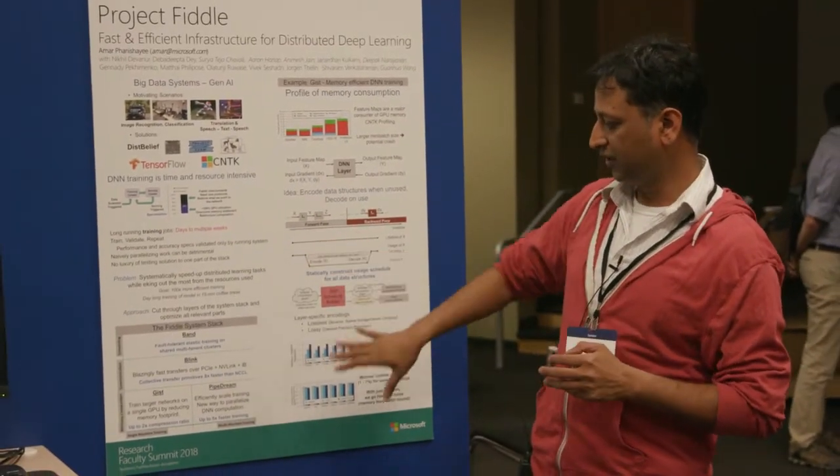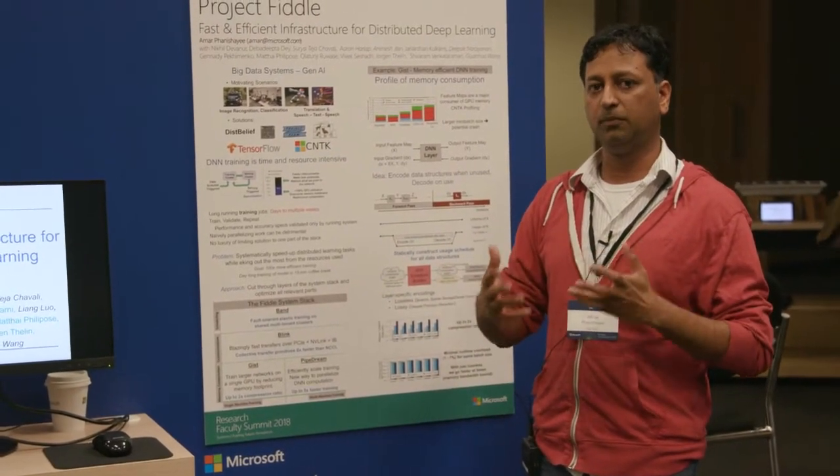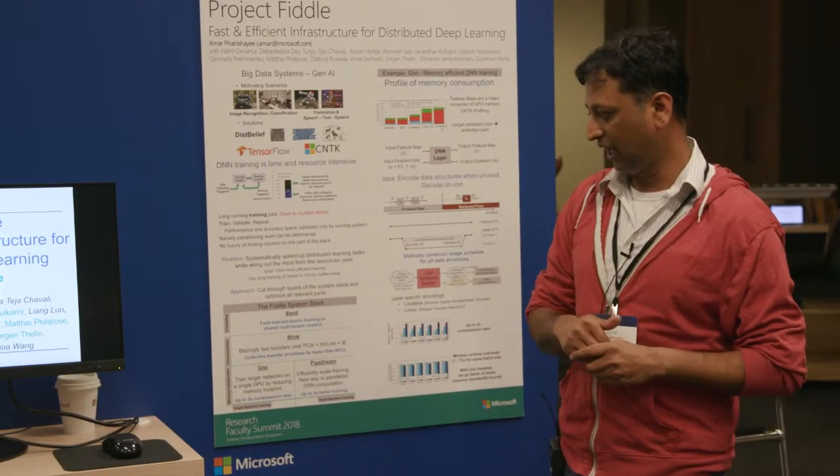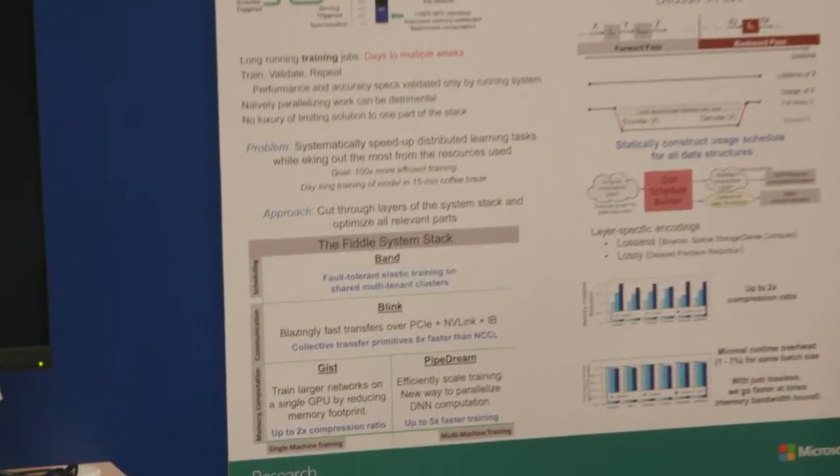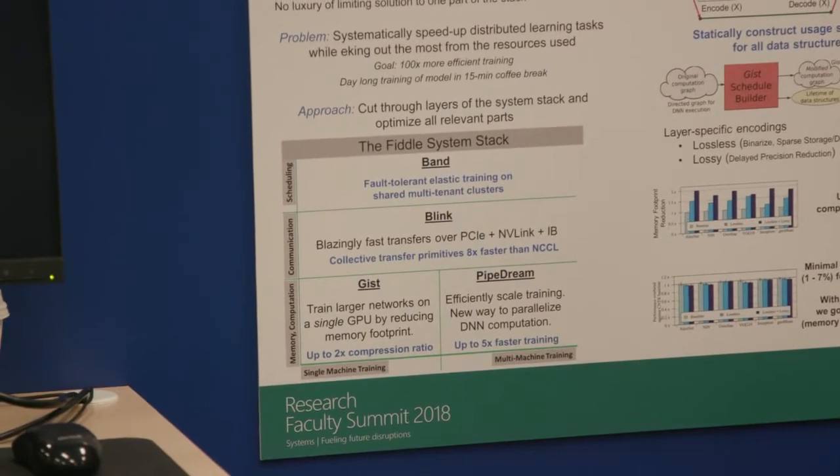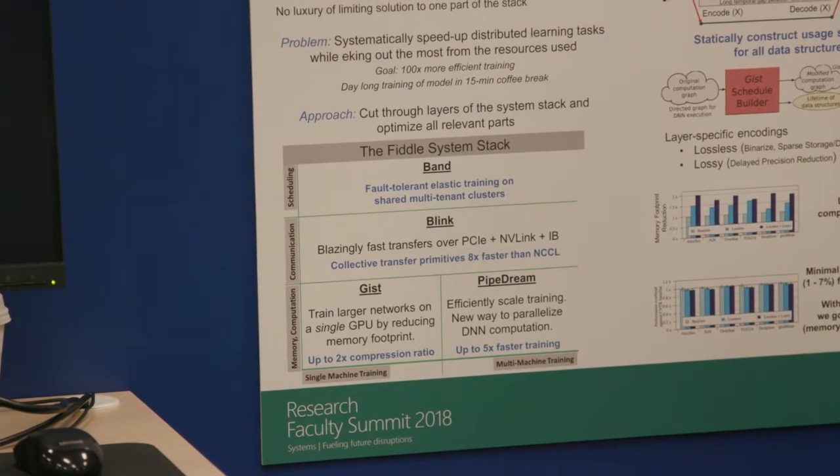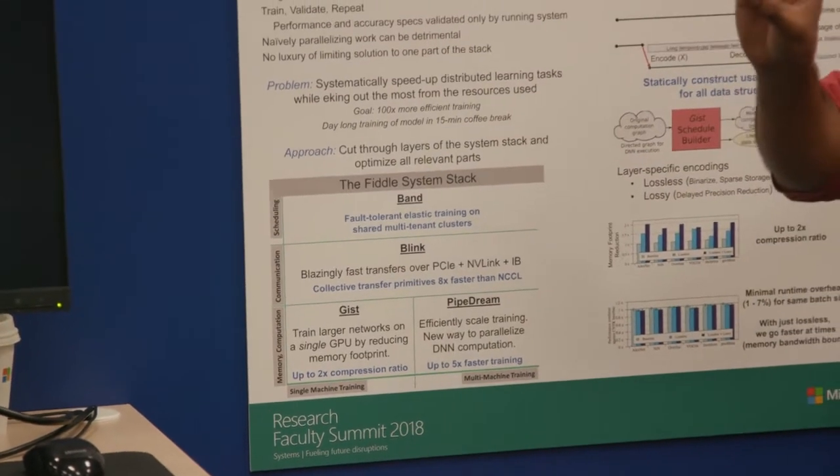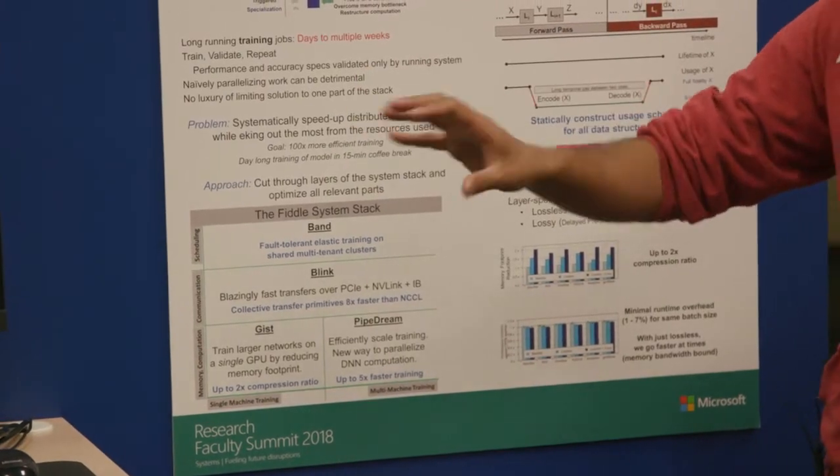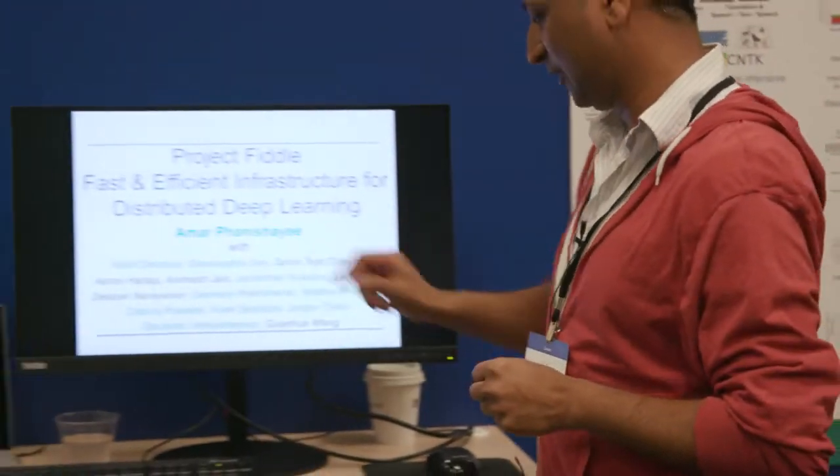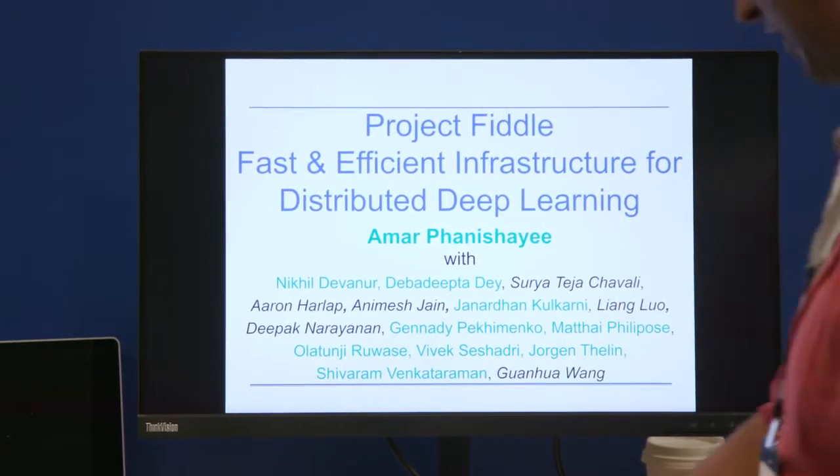So, this was GIST, which is one extreme of the spectrum, making a single GPU do more effectively. Let me take you to this other extreme, which is multi-machine training. Parallel programming is hard in general. And I want to showcase why it's harder parallelizing DNN training. For that, let's move on to this particular terminal. I'm going to skip ahead a couple of slides to get to a slide where I talk about parallel training.